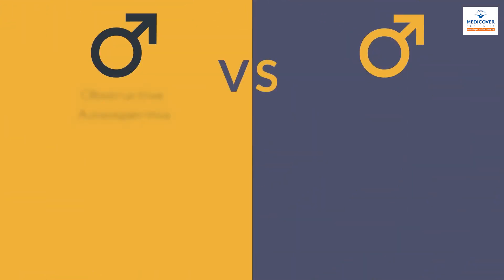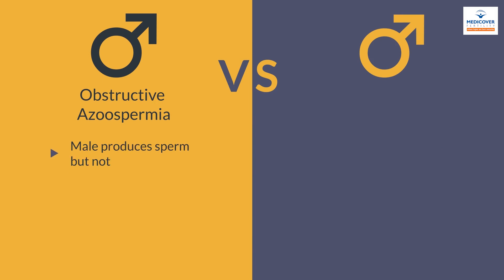There are two types of azoospermia. In obstructive azoospermia, the male produces sperm but they are not found in semen. Sperm can be retrieved by surgical intervention and used for fertilization.